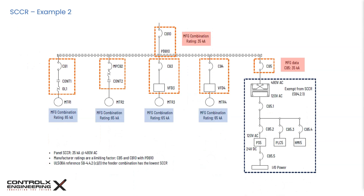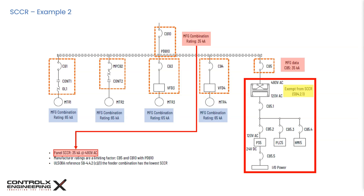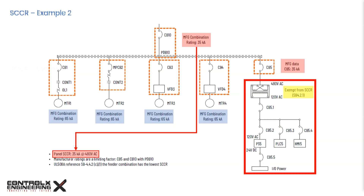In the second example, the main breaker CB10 and power distribution block PDB10 have a combined manufacturer rating of 35 kA, and CB5 also has a rating of 35 kA, while all sub-circuit components have SCCR values of 65 kA. The low-voltage circuit is again exempt from SCCR. The overall SCCR is limited by the manufacturer's combined rating for CB5 and CB10 with PDB10, so this panel's SCCR is 35 kA at 480V.